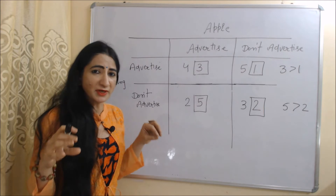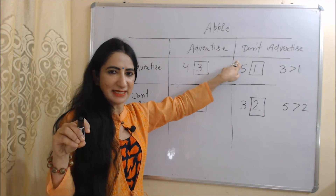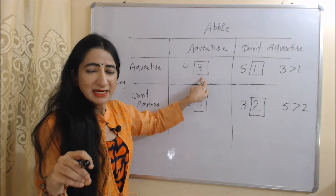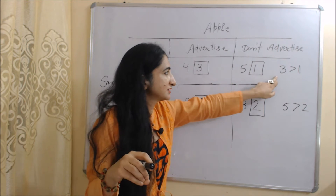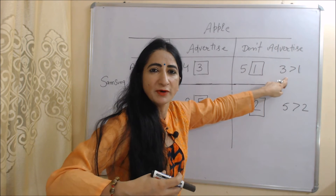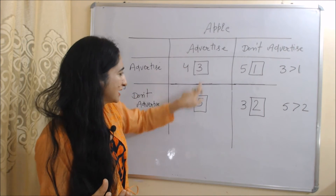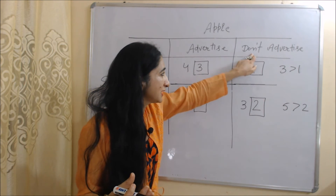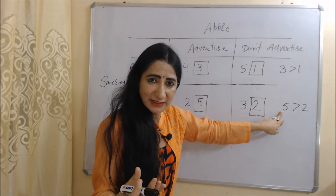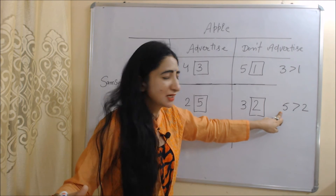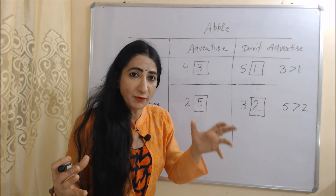Now we are going to talk about the dominant strategy of Apple. Row-wise, advertise or don't advertise indicates Apple. In the first situation, when Apple advertises it receives outcome 3, but when it doesn't advertise it receives 1 — 3 is more than 1. In the next situation, when Apple advertises it receives 5, but when it doesn't advertise it receives 2 — 5 is more than 2. In both situations, the outcome of advertising is greater, so the dominant strategy of Apple is also advertising.